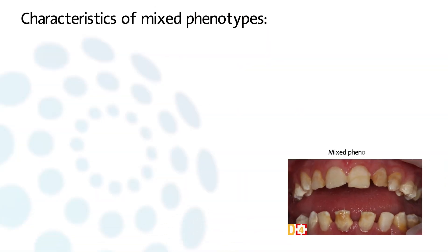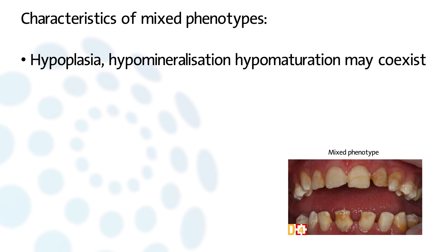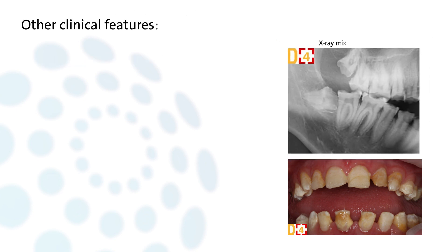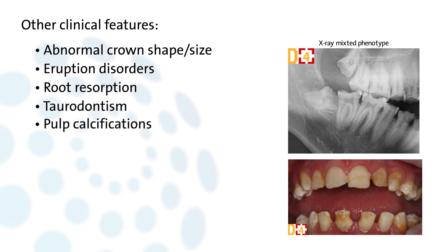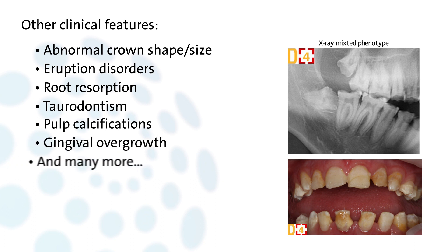Mixed AI phenotypes are frequently encountered. Various defects like hypoplasia and hypermineralization or hypomaturation may coexist in the same patient or even on the same tooth. Other clinical features reported are abnormal crown shape or size, eruption disorders, root resorption, taurodontism, pulp calcifications, and gingival overgrowth. Phenotyping of teeth from AI patients is often complicated by post-eruptive changes that occur during the time spent in the mouth.